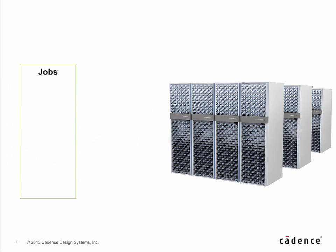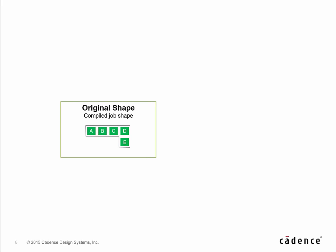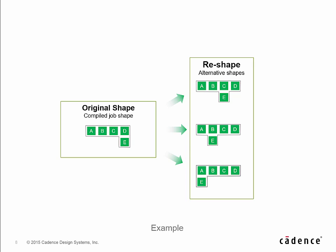Well, in this Tetris game of dispatching queued up verification jobs, the game's just gotten a little bit more interesting. With the next generation Palladium Z1 architecture, incoming jobs of variable sizes can be reshaped, allowing a more optimal placement in the verification computing platform. Here we're sharing a few examples of alternative shapes for a five domain job. What's more, the reshaping task is automated so you don't have to even think about how to reshape a job.